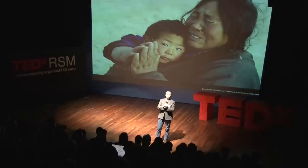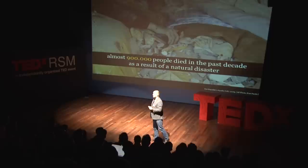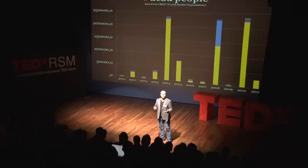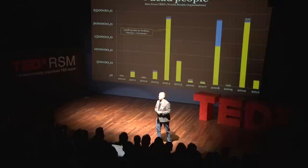These events destroy the infrastructure of a country or region, but more importantly, they also threaten the social fabric of a community. In the past 10 years, almost 900,000 people have lost their lives as a result of a natural disaster. Some of these disasters are much more serious than others. For instance, the earthquake in the Indian Ocean and the resulting tsunami killed more than 200,000 people in more than 14 different countries, and the Haiti earthquake also cost the lives of many thousands of people.